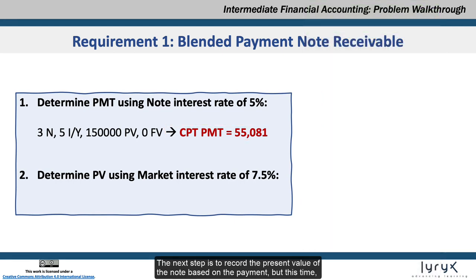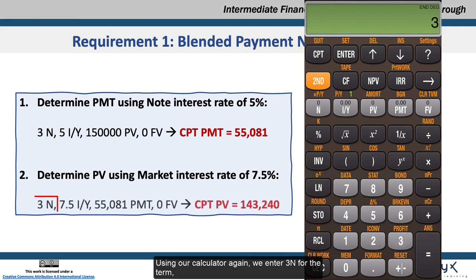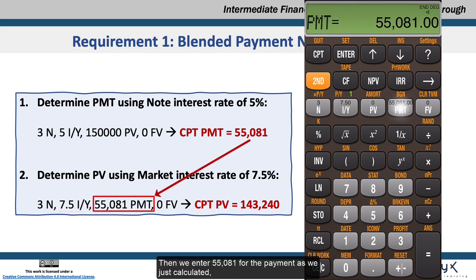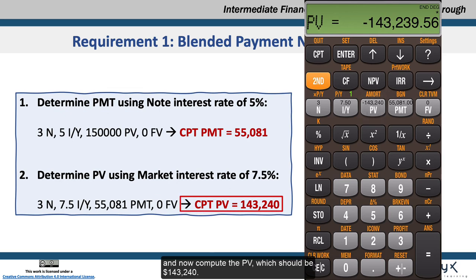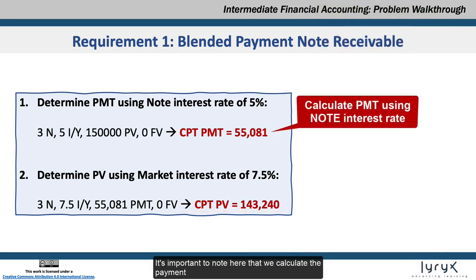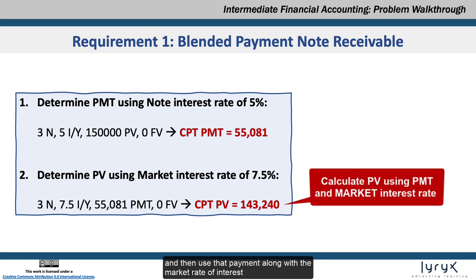The next step is to record the present value of the note based on the payment, but this time using the market rate of interest, which is the implicit rate that Acme must use to account for the note receivable. Using our calculator again, we enter 3N for the term, but now the interest rate is 7.5IY, which is the market rate of the note. Then we enter 55,081 for the payment as we just calculated, 0 as the future value, and now compute the PV, which should be $143,240. It's important to note that we calculate the payment using the interest rate on the note, and then use that payment along with the market rate of interest to recalculate the present value of the note for accounting purposes.